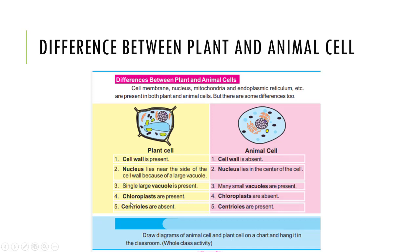Chloroplasts are present in plant cells but they are absent in animal cells. Centrioles are absent in plant cells and they are present in animal cells.